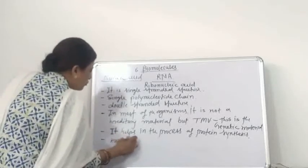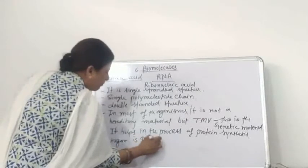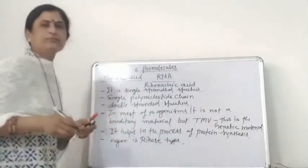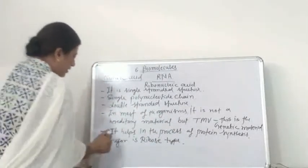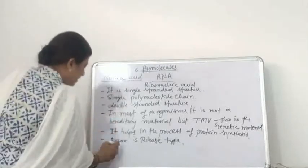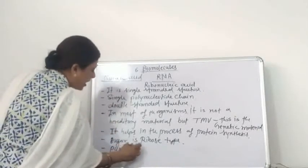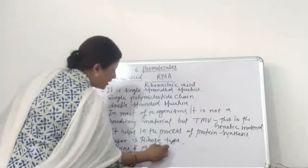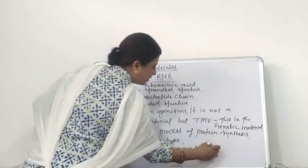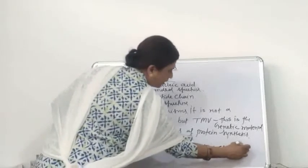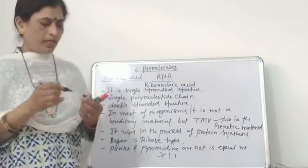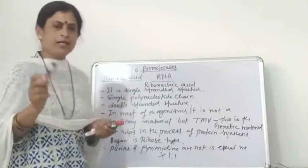In the RNA molecule, the sugar is a ribose type. The pentose sugar present is a ribose type. The purines and pyrimidines are not present in equal number — meaning a one-to-one ratio is not found in the RNA molecule, because it is a single-stranded structure.